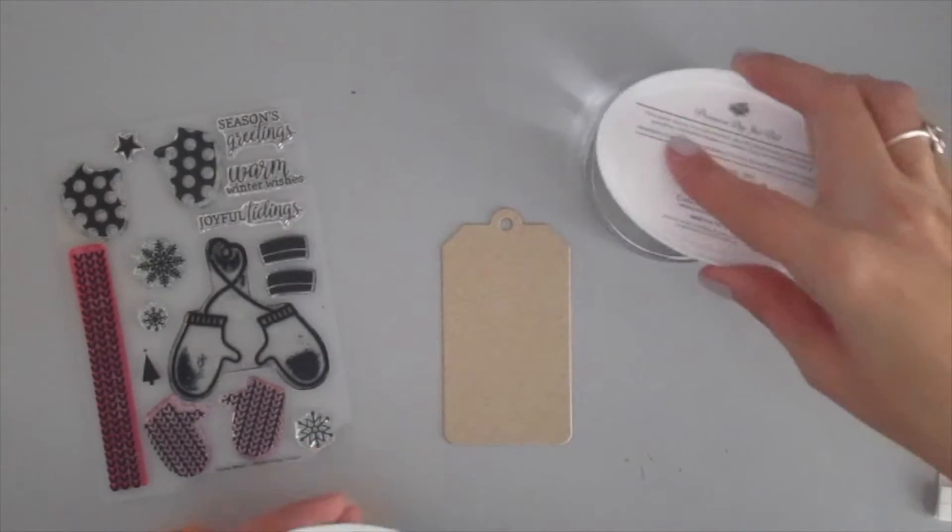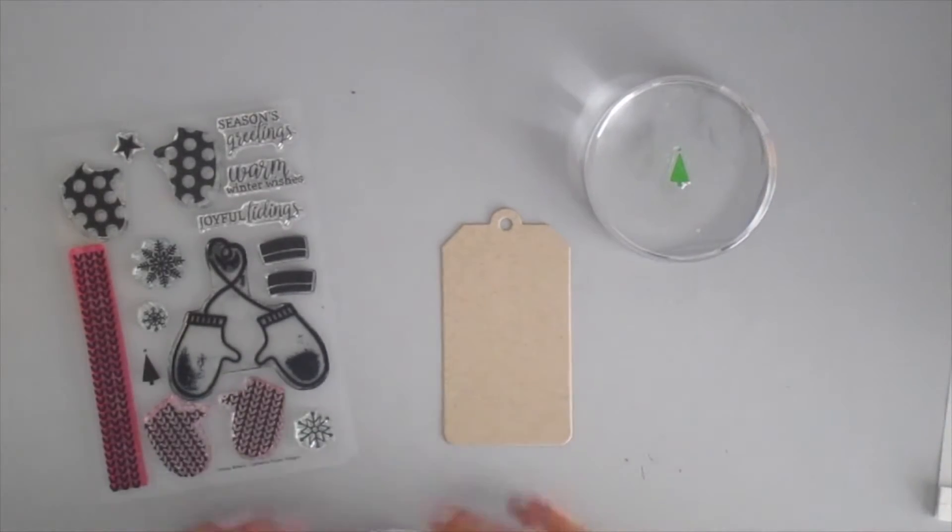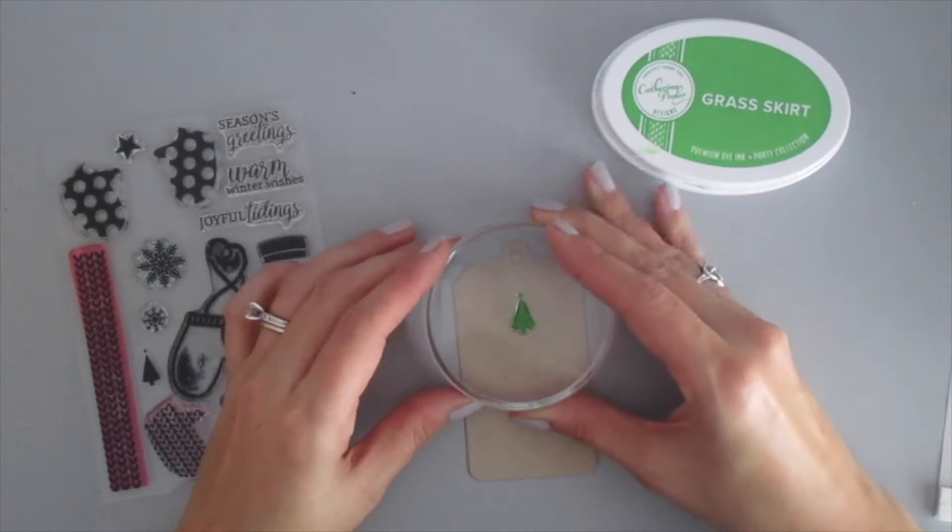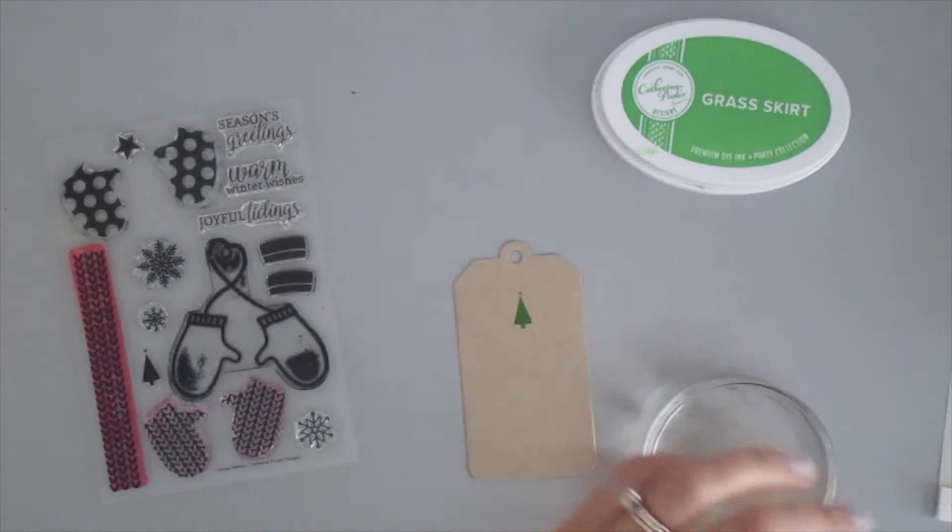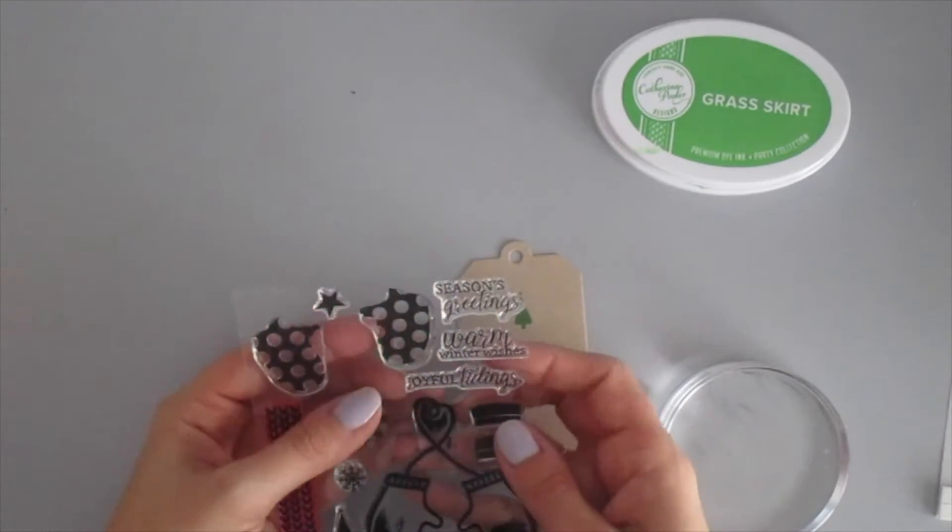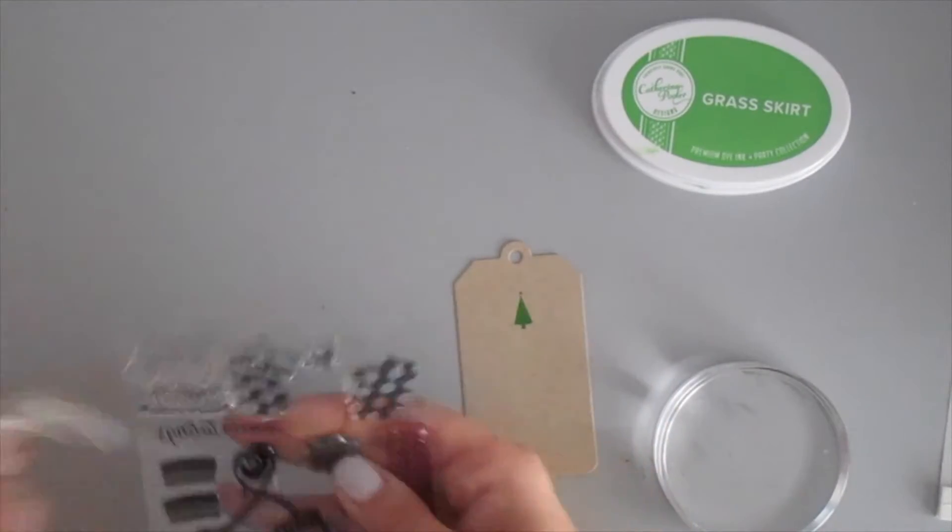I'm using the Grass Skirt green again and I just want to mention that the ink that I'm using along with this cute little acrylic block, I like the circle one, it's different, that comes in the foundations box which is available in Katherine Pooler's store along with all of the stamps and dies that I'm using today.